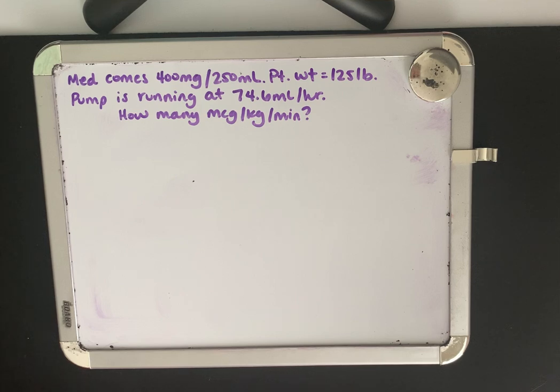So let's look at our problem. Our physician orders dopamine 400 milligrams in 250 of D5W for a patient that weighs 125 pounds. The nurse receives report and she notices that the pump is running at 74.6 mL per hour. So how many mcg per kilo per minute is this?